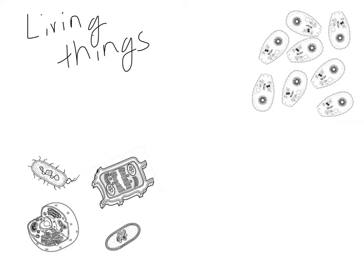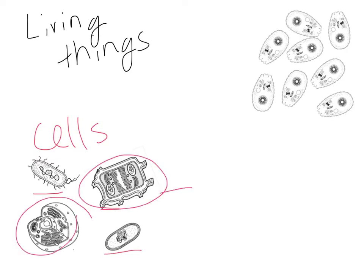Remember some of the characteristics that something needs to have to be considered living, and to be considered the first living thing or the common ancestor. First of all, all living things are made up of cells — it doesn't matter about the complexity. It can be a simple prokaryote or a more complex eukaryotic plant or animal cell. Cells are the simplest form of living things, and it's believed the very first life form was one single cell — that common ancestor to everyone.